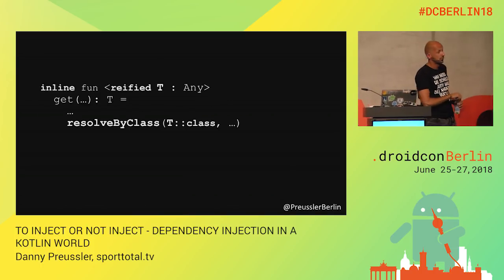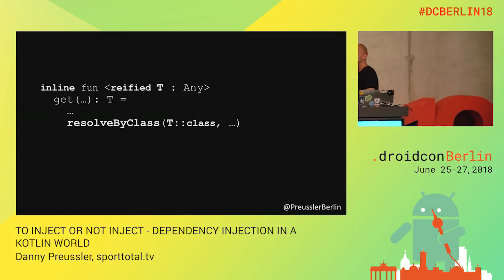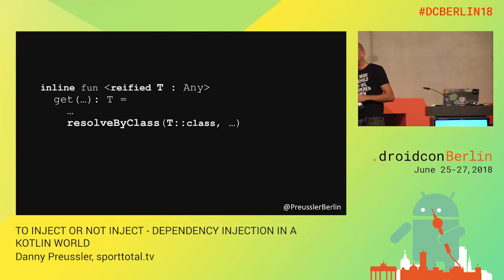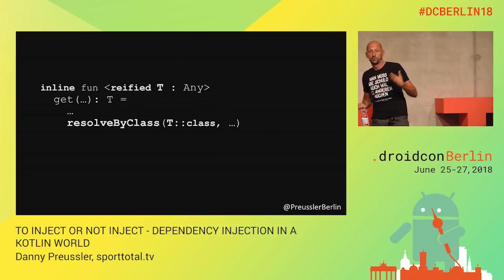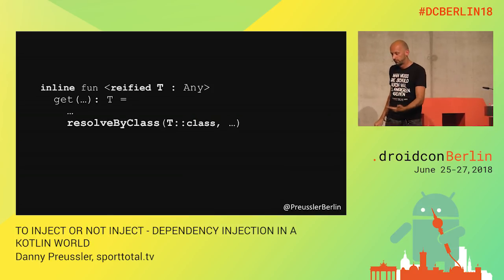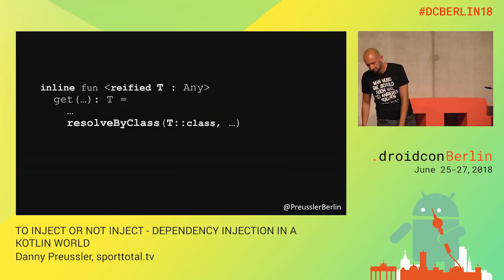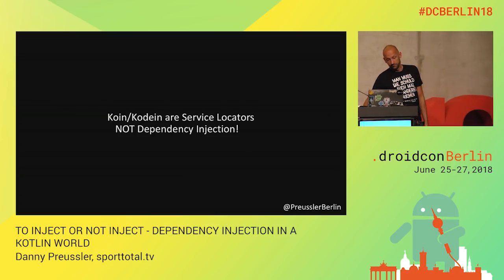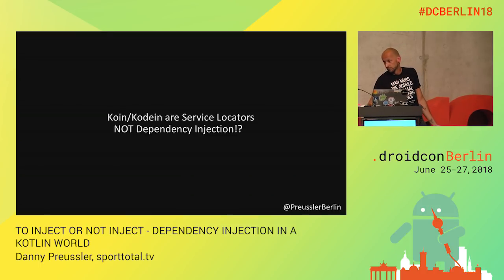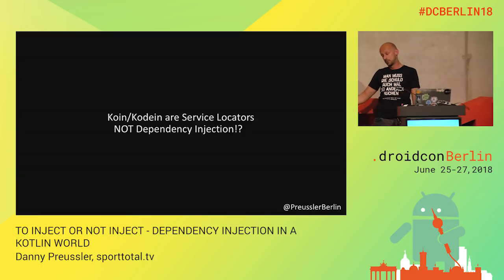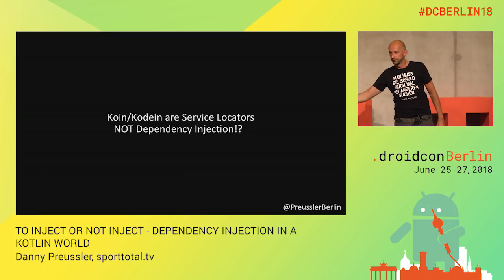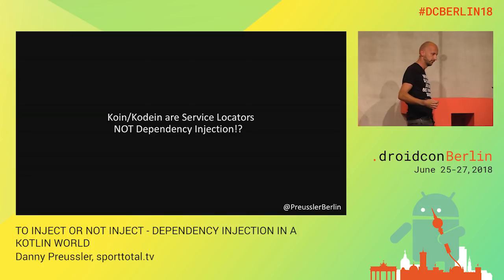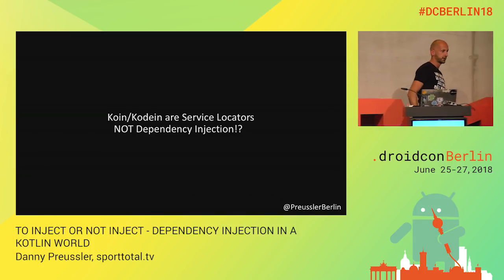So let's look at what Codein and Koin are doing under the hood — behind the 'by inject.' You'll find something like this: the whole thing is based on inline reified logic so it will only work in Kotlin, and it resolves the generic type by class. This is pretty much what we just saw. So does it mean Codein and Koin are service locators? You could argue that this is infrastructure code — this is not your own code pulling there.